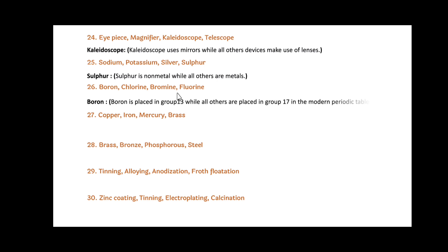Next: Boron, Chlorine, Bromine and Fluorine. Friends, in this, Boron is the odd one out. Since Boron is placed in Group 13, while all others — Chlorine, Bromine and Fluorine — are placed in Group 17 of the modern periodic table.